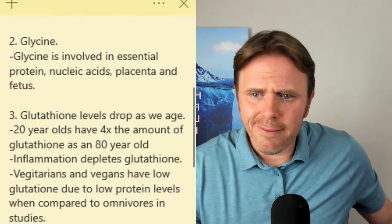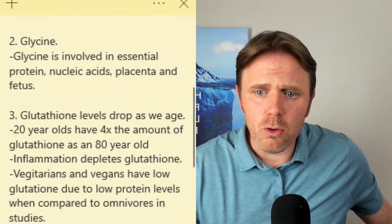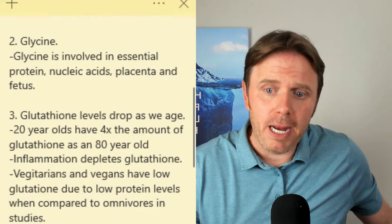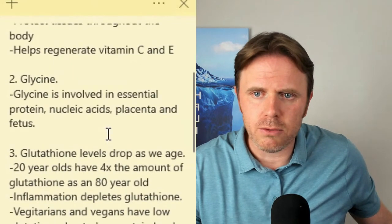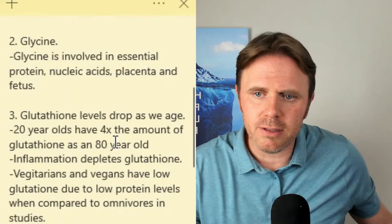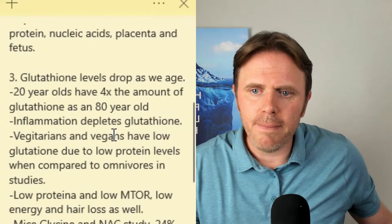If you do get amino acids from plant sources, you get 70 to 80 percent starch and carbohydrates, which is very prone to higher glucose and more insulin resistance — which is going to drive more oxidative stress and increase the need for glutathione. Vegetarians and vegans have lower glutathione when compared to omnivores in different studies, which is really important to see.